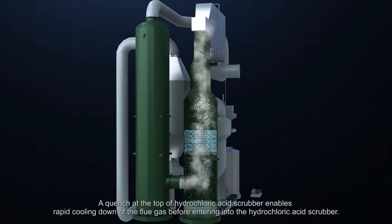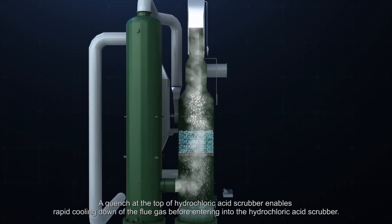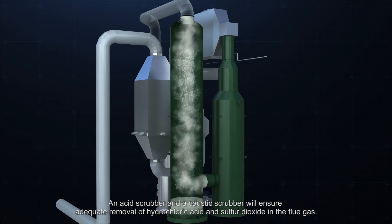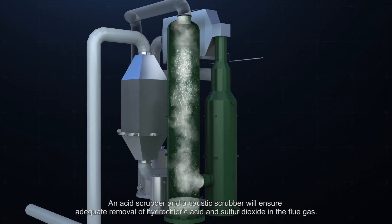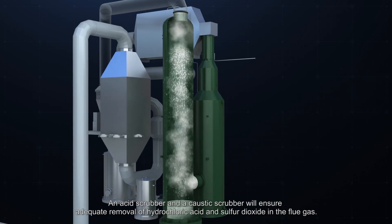A quench at the top of hydrochloric acid scrubber enables rapid cooling down of the flue gas before entering into the hydrochloric acid scrubber. An acid scrubber and a caustic scrubber will ensure adequate removal of hydrochloric acid and sulfur dioxide in the flue gas.